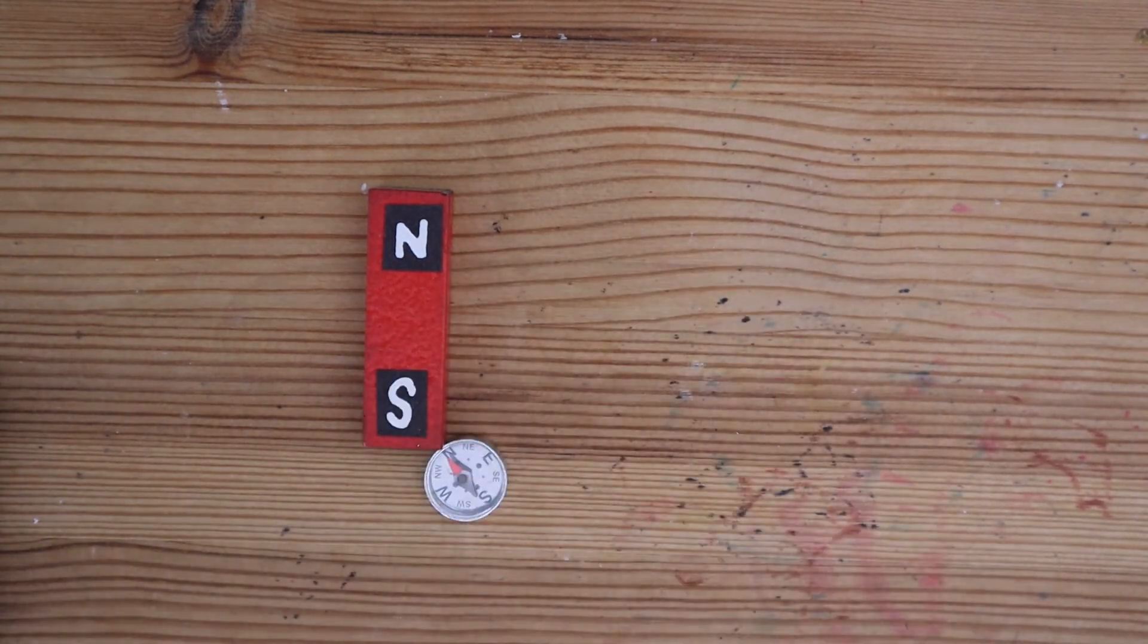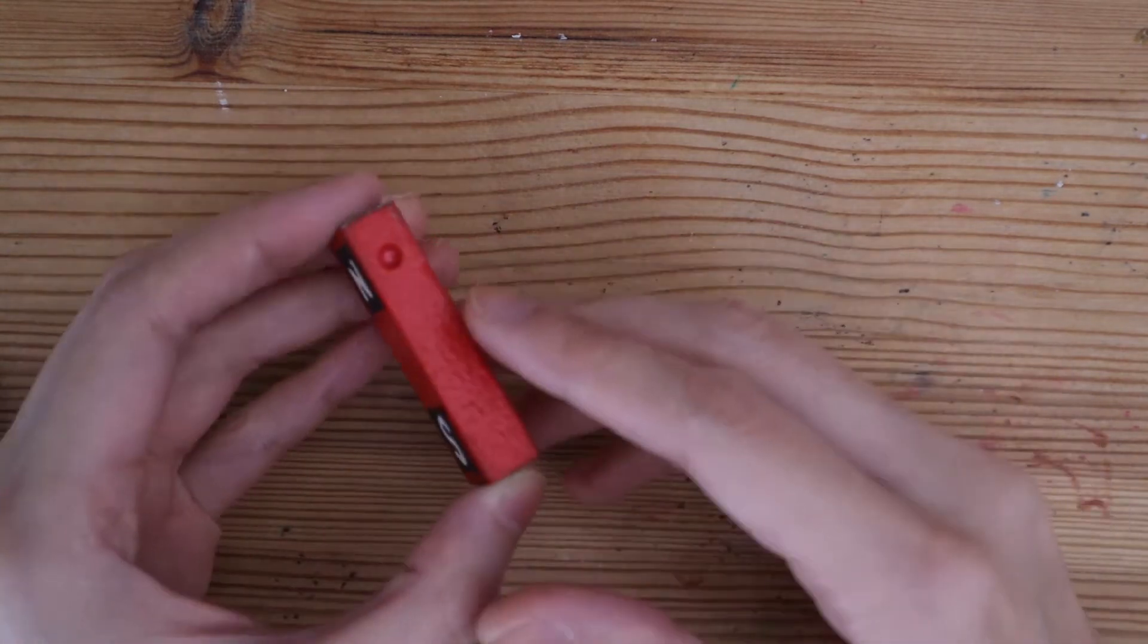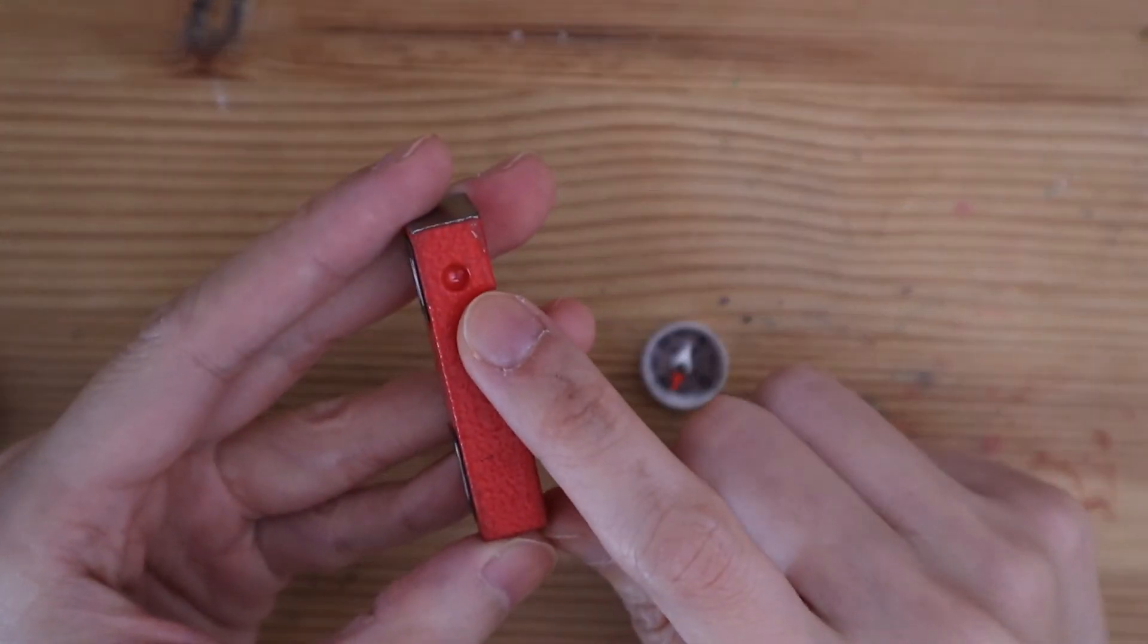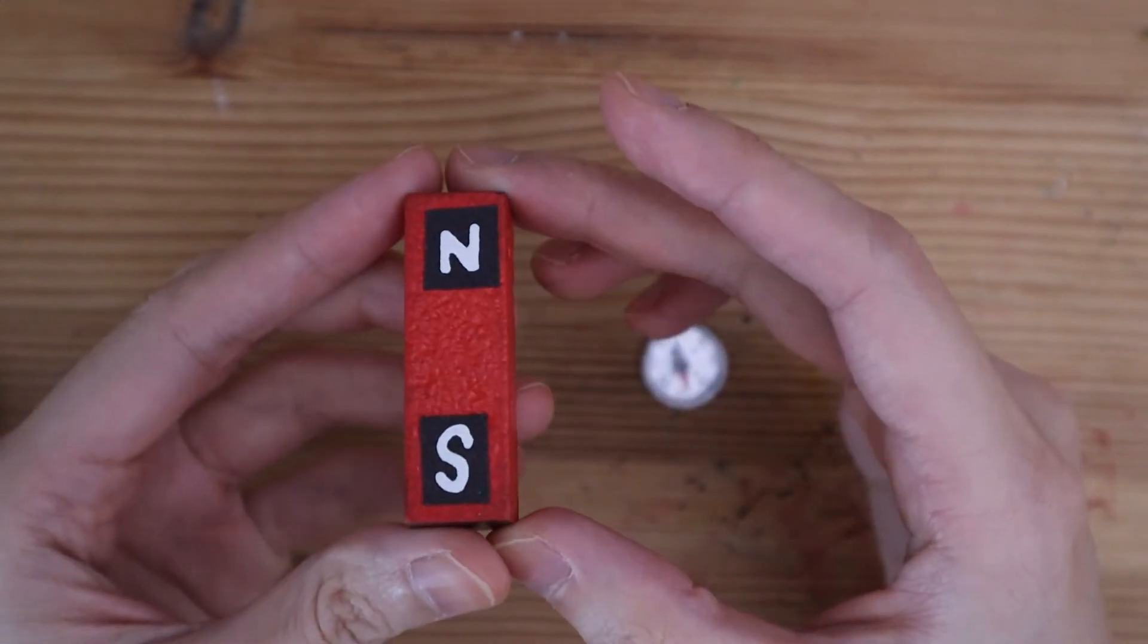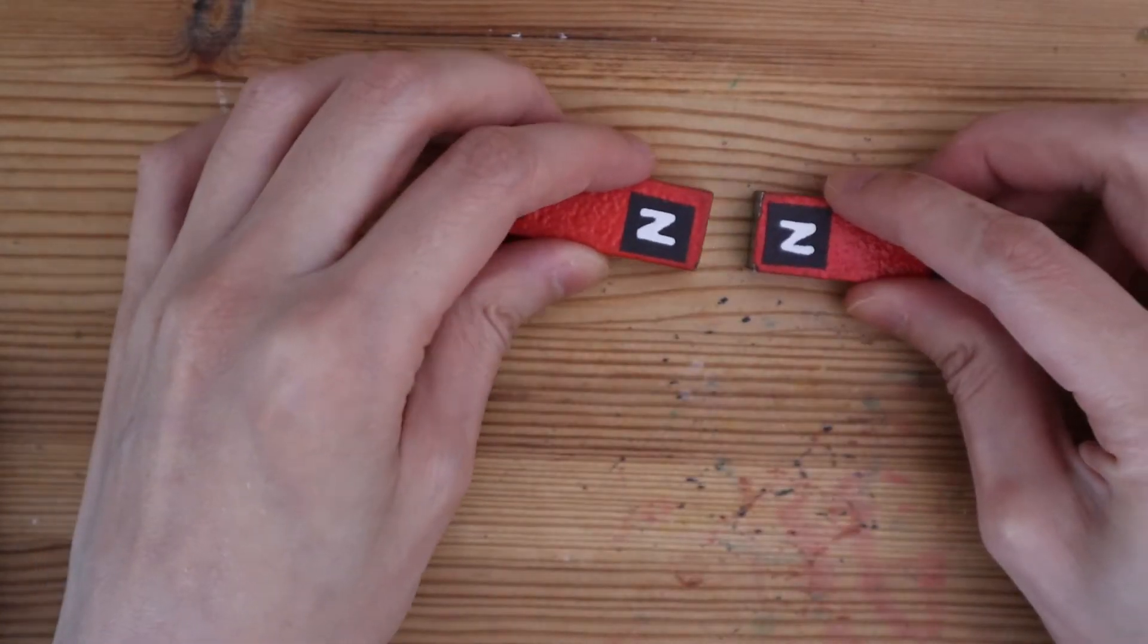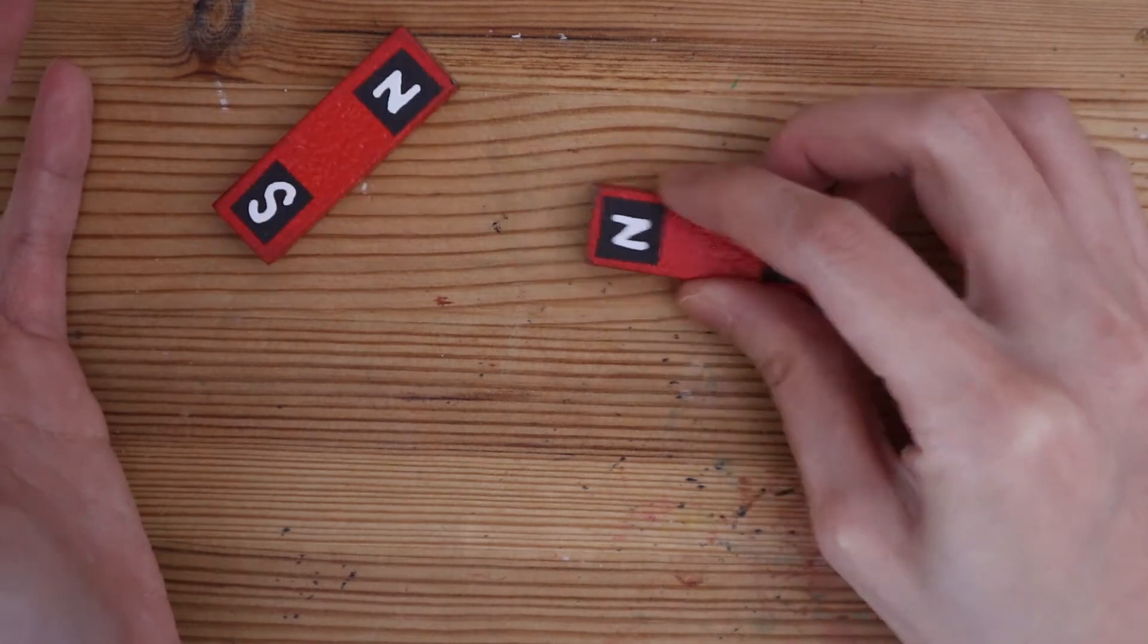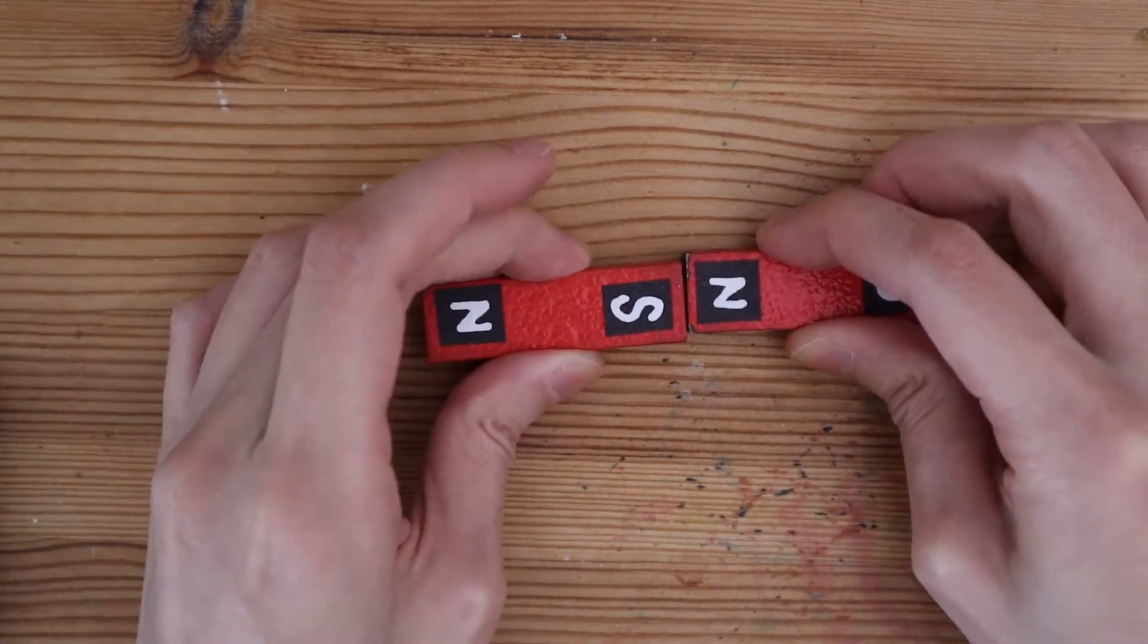Some magnets are manufactured with a dimple at one end to indicate the north pole. That shows we were correct. If I have two permanent magnets next to each other, they can attract or repel depending on their directions.